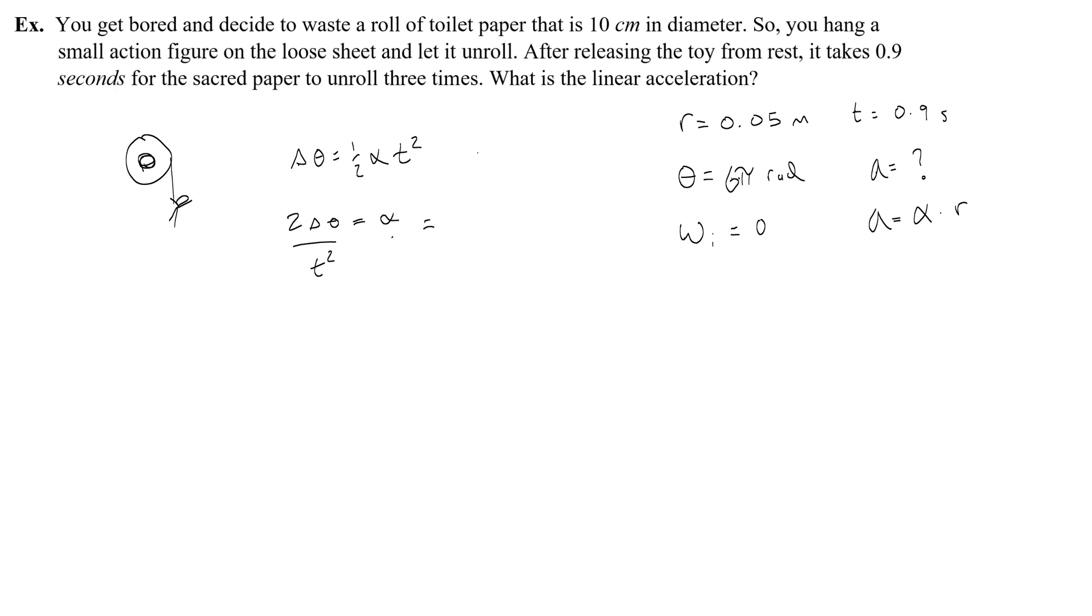Now I can find the angular acceleration is 2 times 6 pi radians divided by 0.9 seconds. This is going to give me—oh wait, I almost made a huge mistake—0.9 seconds squared. This is going to give me 46.5 radians per second squared.